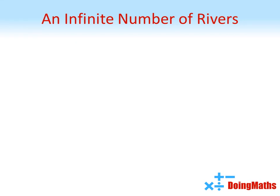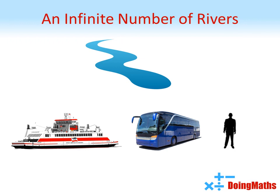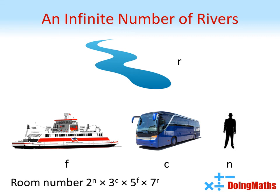This method can carry on. If we had an infinite number of rivers, each with an infinite number of ferries carrying an infinite number of coaches containing an infinite number of passengers, we could denote each river by the letter R and place each person in the room 2 to the power of N times 3 to the power of C times 5 to the power of F times 7 to the power of R, with 7 being the fourth prime number. For each further level of infinity, we simply add another prime number to our expression. Interestingly, although we can do this for any finite number of infinities, it will not work for an infinity of infinities.